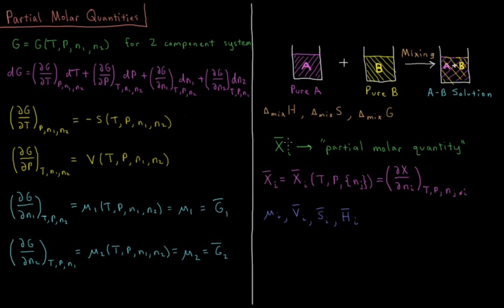Now we introduce the idea of a partial molar quantity. Molar quantities are thermodynamic functions divided by the number of moles: G/N is molar Gibbs energy, S/N is molar entropy, V/N is molar volume. When we divide an extensive function by the number of moles we get an intensive molar quantity. A partial molar quantity for substance i — denoted X̄ᵢ — is a function of temperature, pressure, and the number of moles of every substance in the mixture. It equals the partial derivative of that quantity with respect to moles of substance i, holding T, P, and all other mole numbers constant.